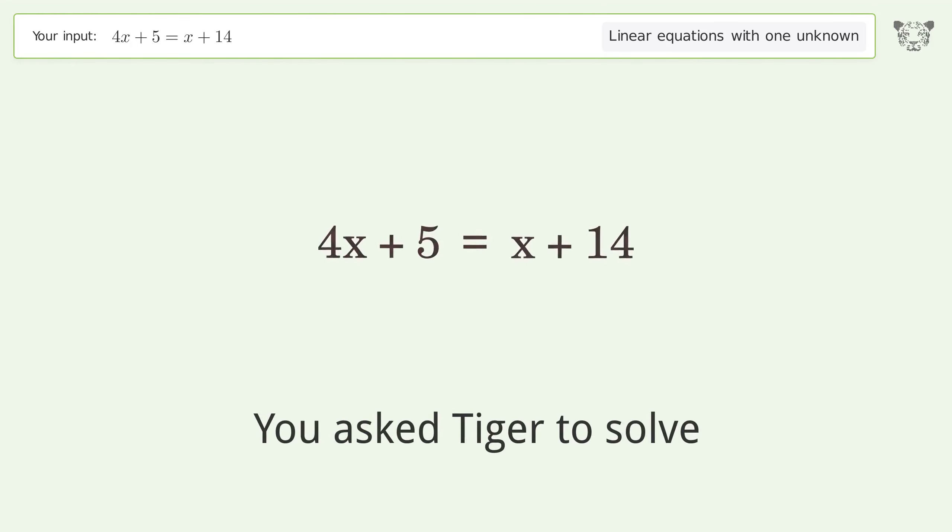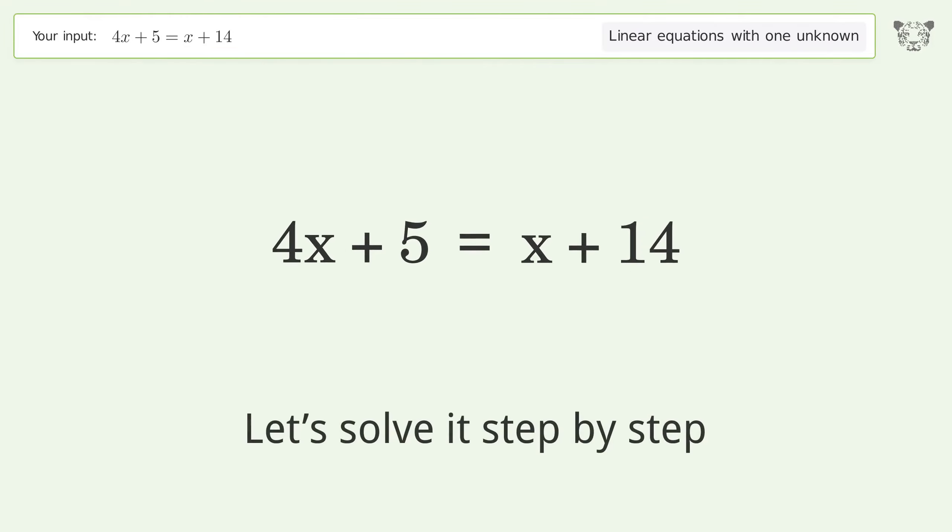You Asked Tiger to Solve. This deals with linear equations with one unknown. The final result is x equals 3. Let's solve it step by step.